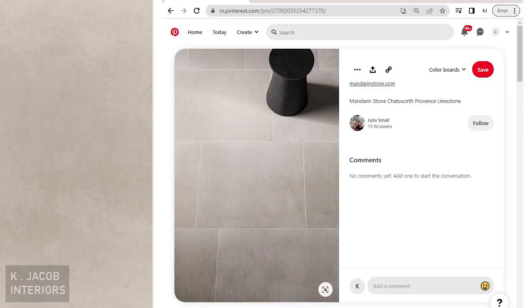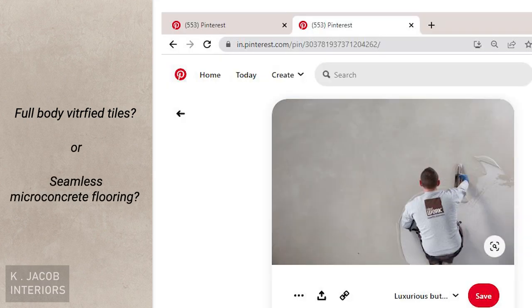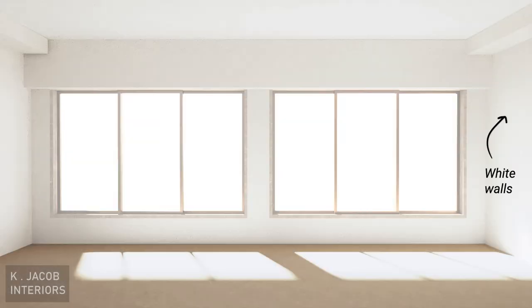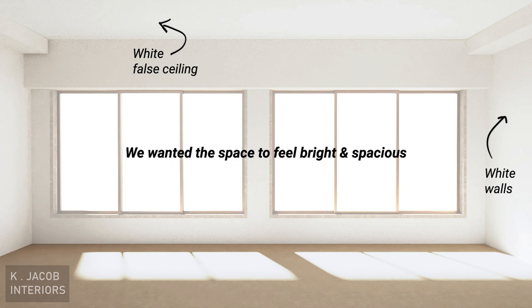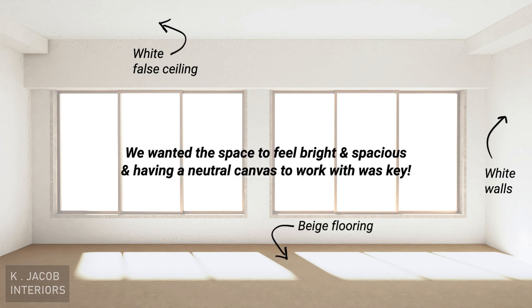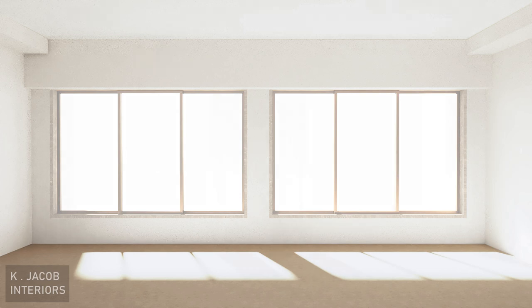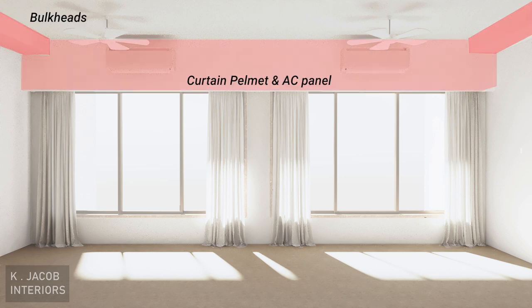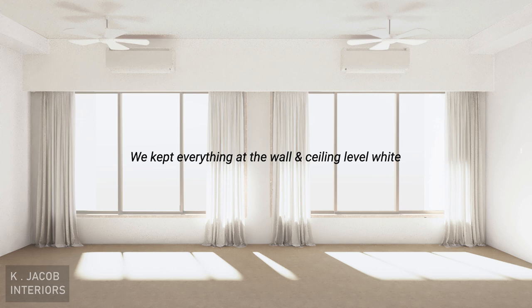For the flooring, we proposed a nice beige floor. We are still trying to figure out if we should go for a full body vitrified tile or a more seamless look like a nice micro concrete flooring. But for now, beige is a go. As for the walls and ceilings, we went with white — we wanted the space to feel bright and spacious, and having a neutral canvas to work with was key. We didn't want the bulkheads, pelments and all that to clutter up the space, so we kept everything on the wall and ceiling level in pure white. This way it blended in with the rest of the white backdrop and reduced visual clutter.